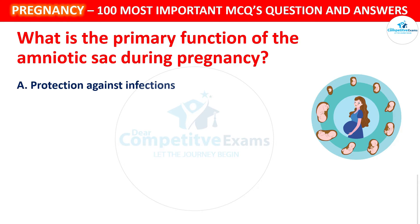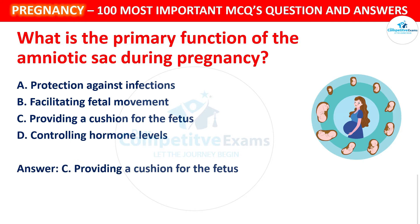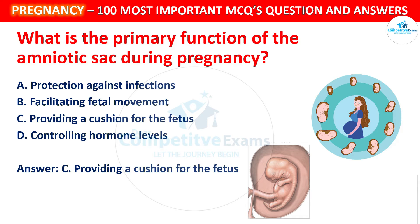Next question: What is the primary function of the amniotic sac during pregnancy? Your options: Protection against infections, Facilitating fetal movement, Providing a cushion for the fetus, or Controlling hormone levels. The correct answer is Providing a cushion for the fetus. The amniotic sac surrounds the fetus, providing a protective cushion and maintaining a stable environment for fetal development.